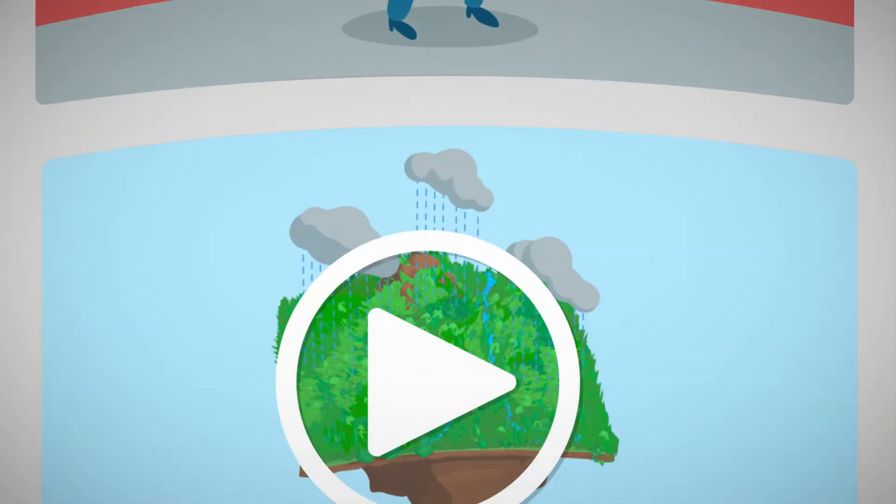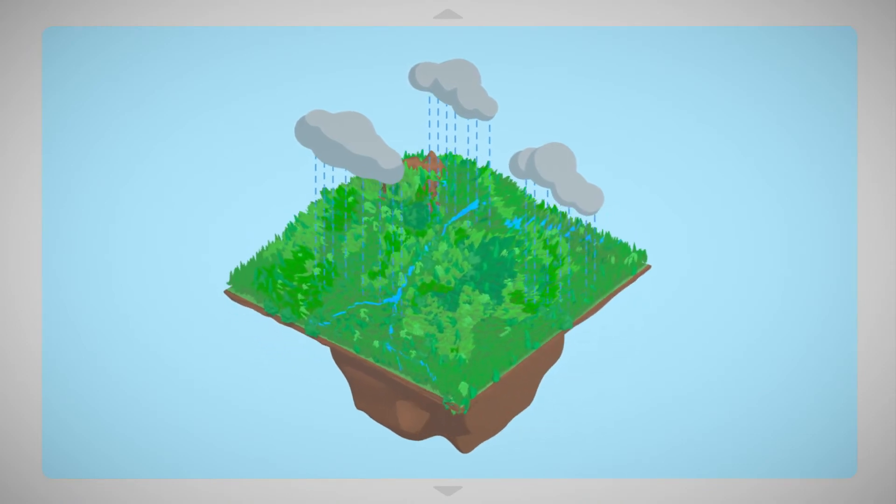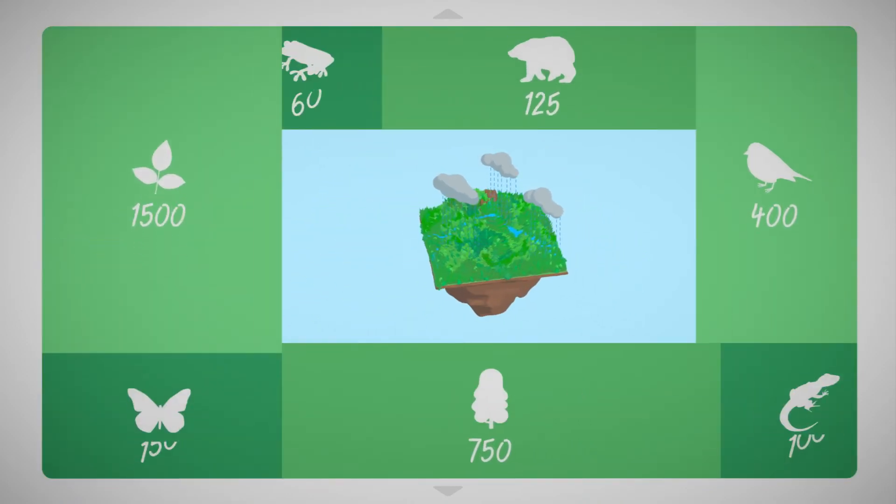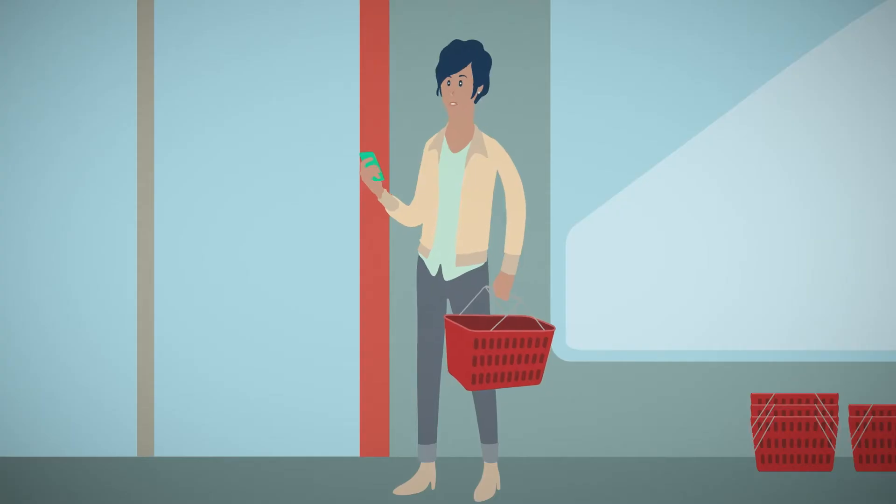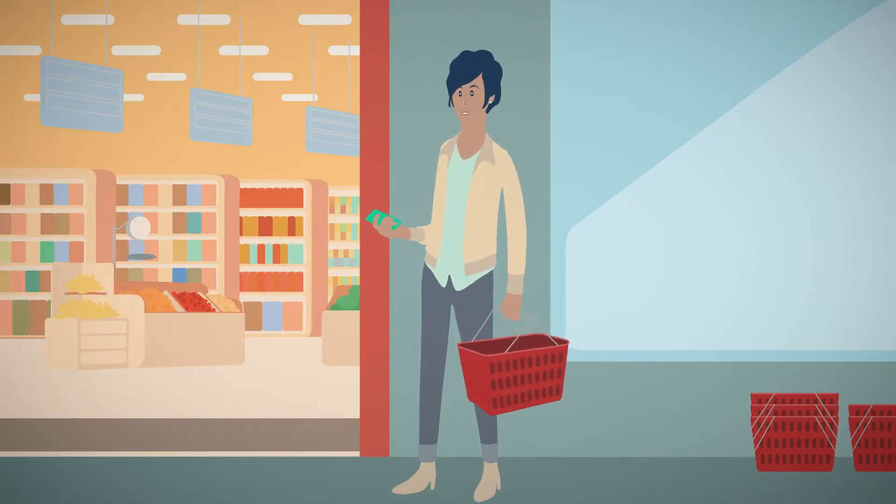Really? This is a small patch of rainforest. It's home to over 3,000 different species of plants and animals. Like the red-eyed tree frog. That's pretty cool, but it's not the whole story.